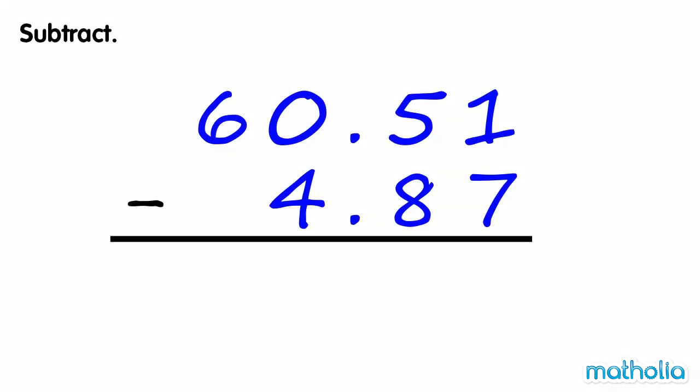Find 60.51 minus 4.87. We cannot subtract 7 hundredths from 1 hundredth, so we regroup 1 tenth into 10 hundredths. We now have 11 hundredths. 11 hundredths minus 7 hundredths equals 4 hundredths.